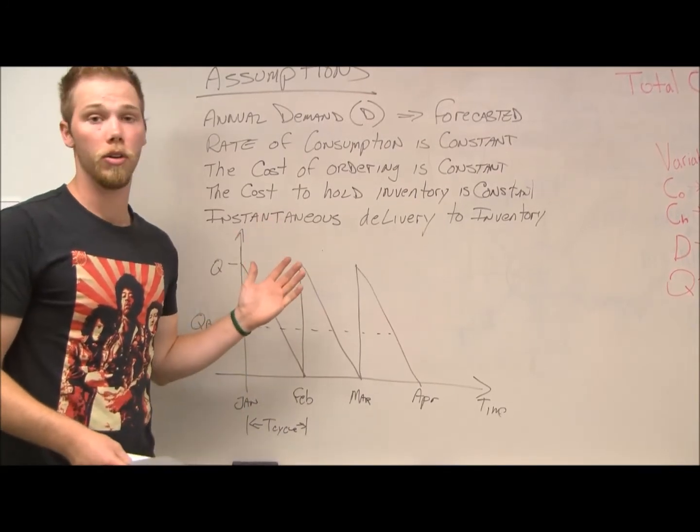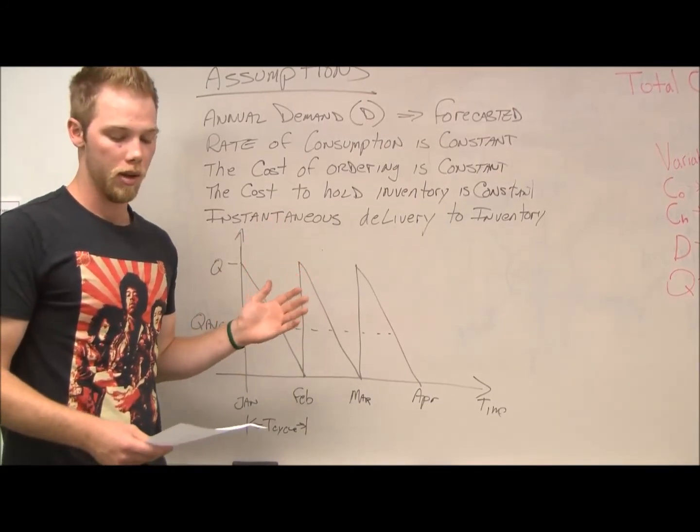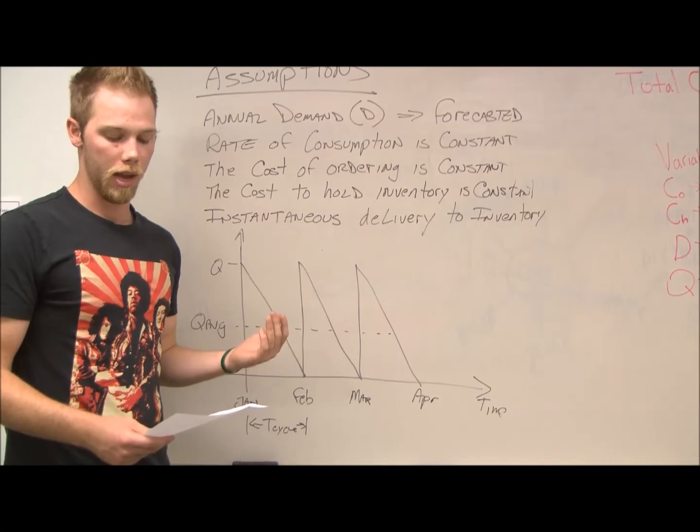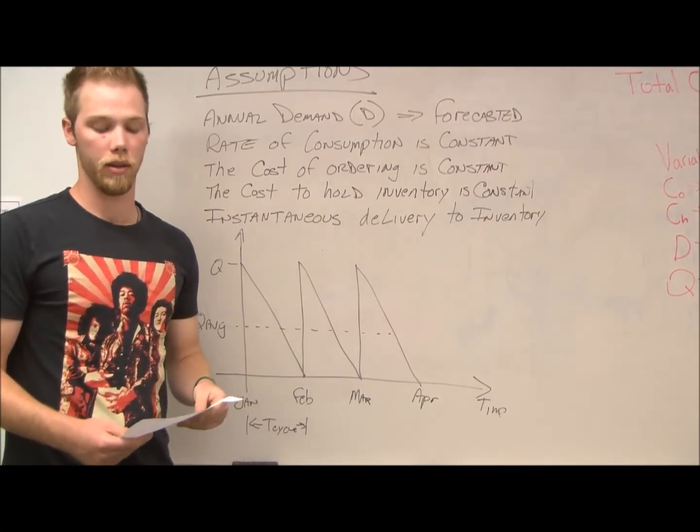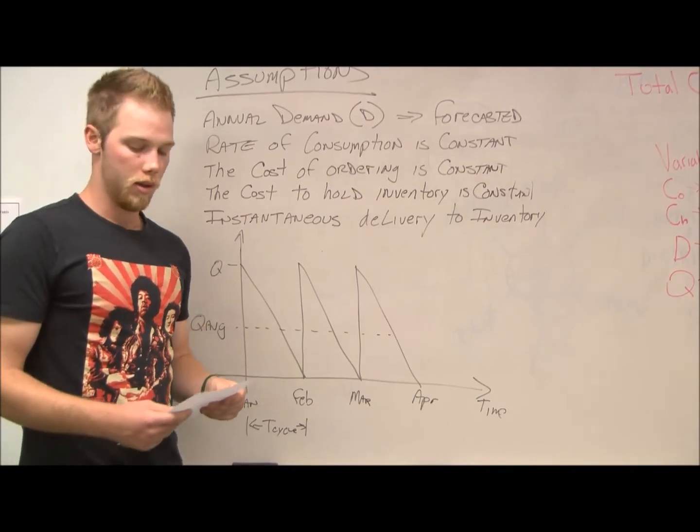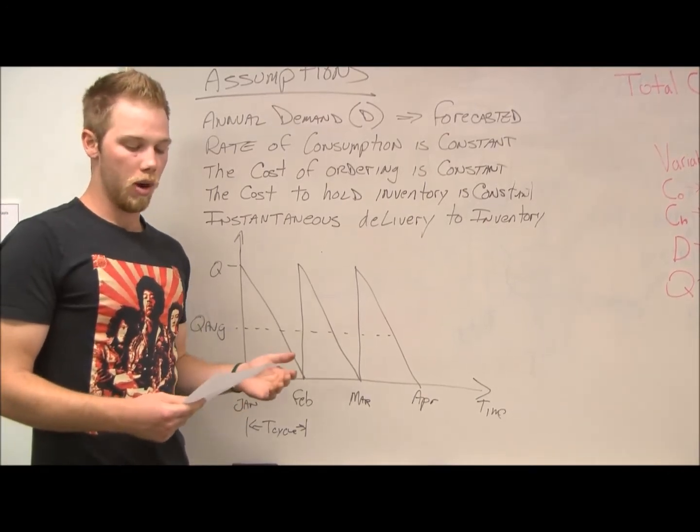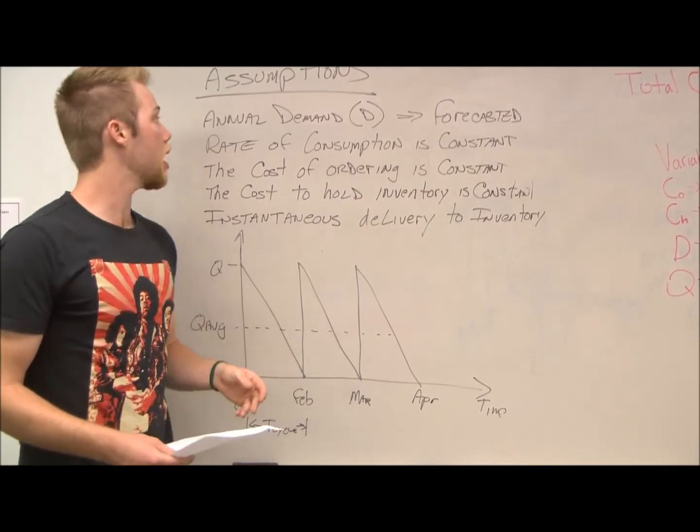So, when we're approaching the EOQ model, we have certain assumptions. One of these assumptions is the EOQ model determines optimal order size by minimizing total annual costs. The following EOQ models will take away one assumption at a time.